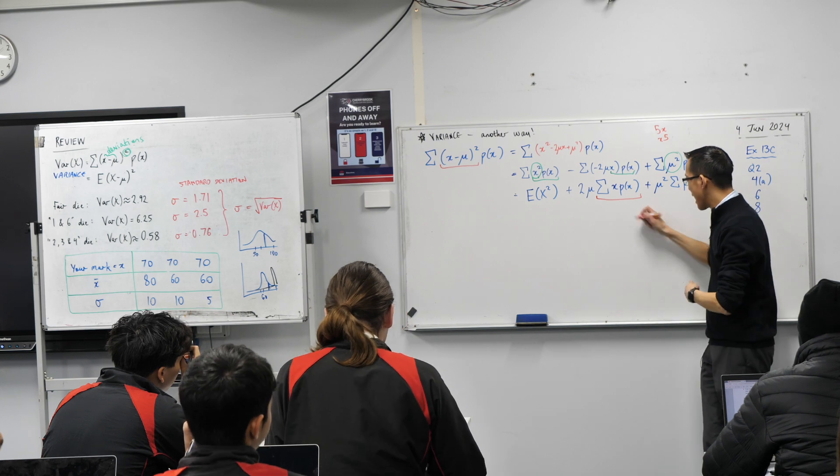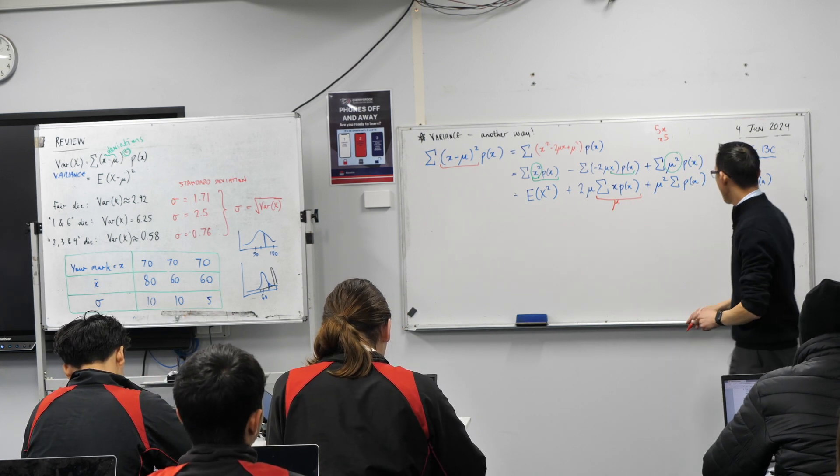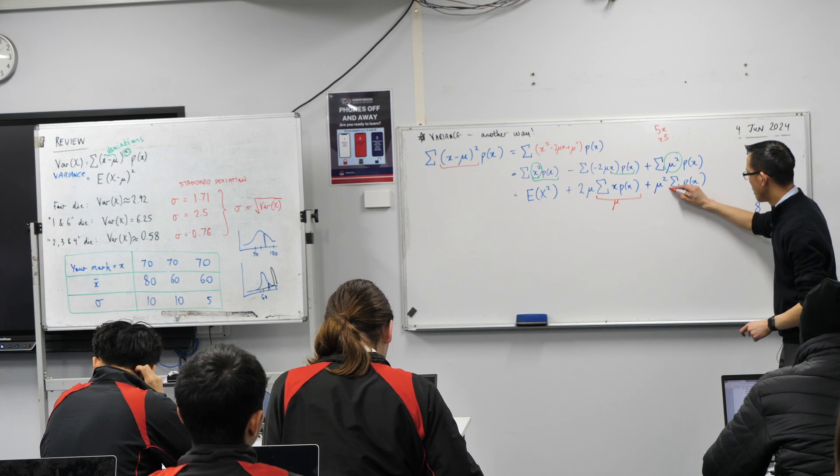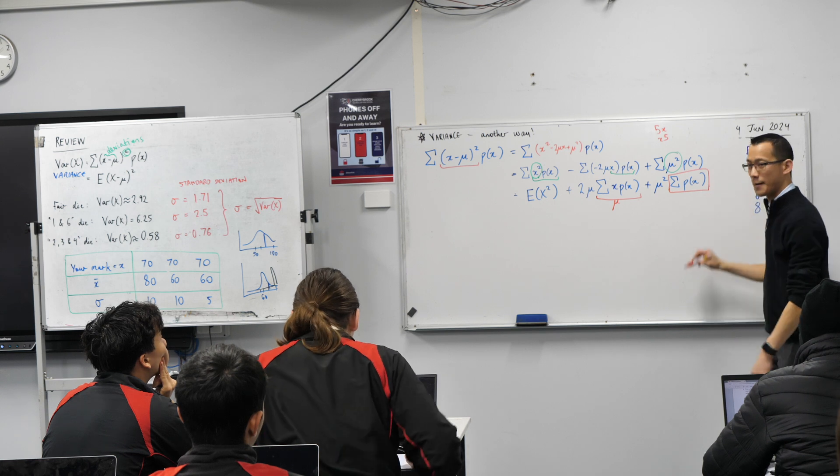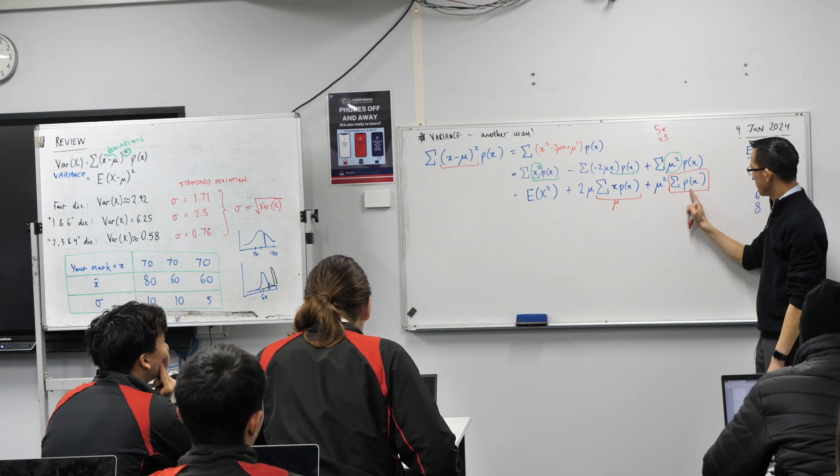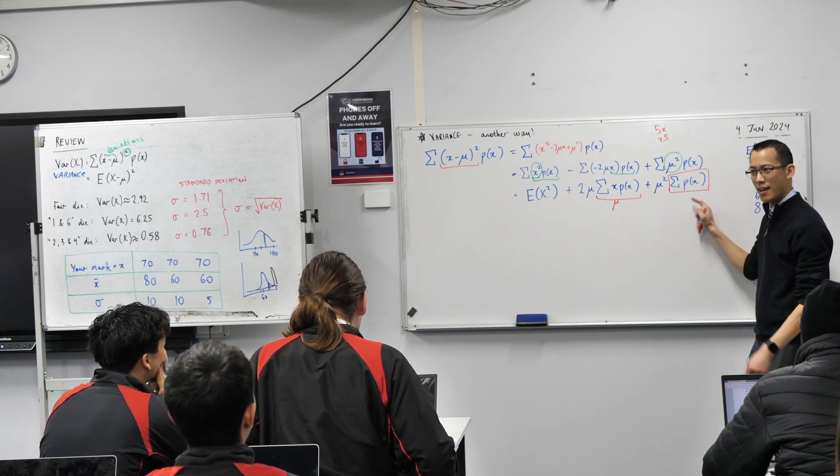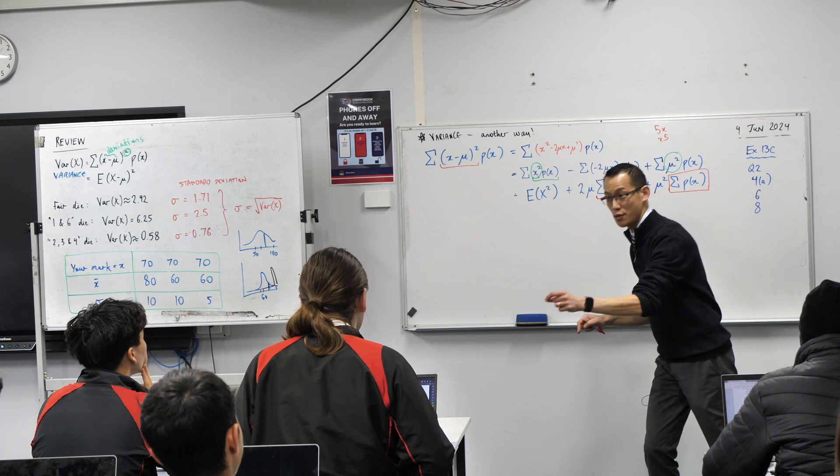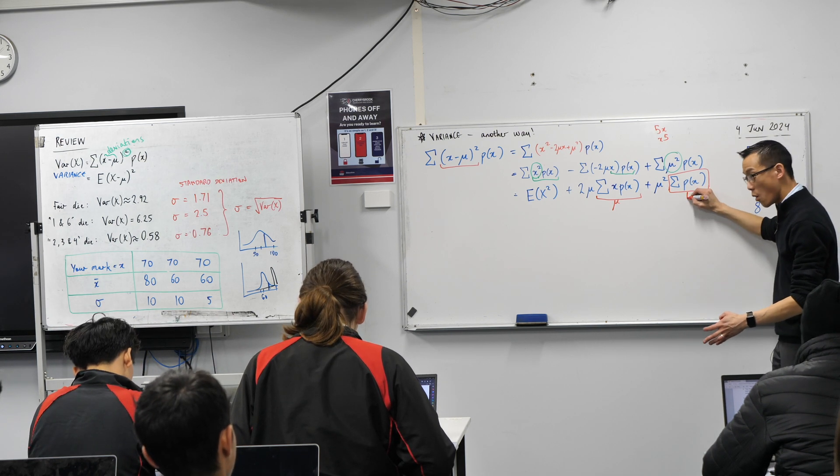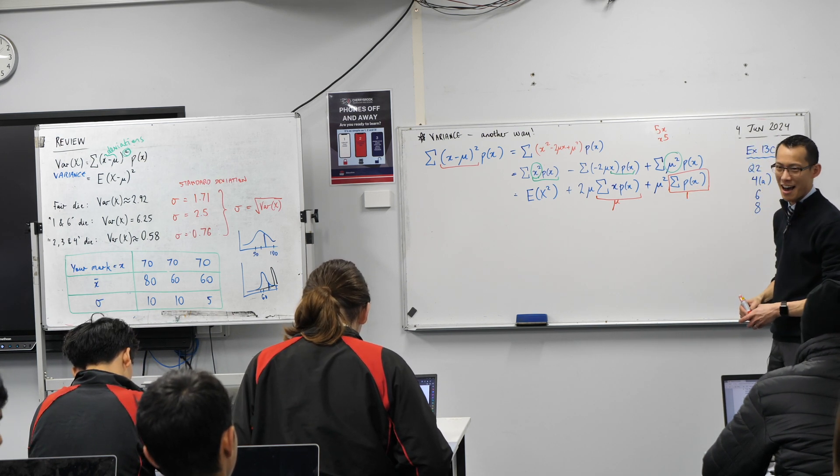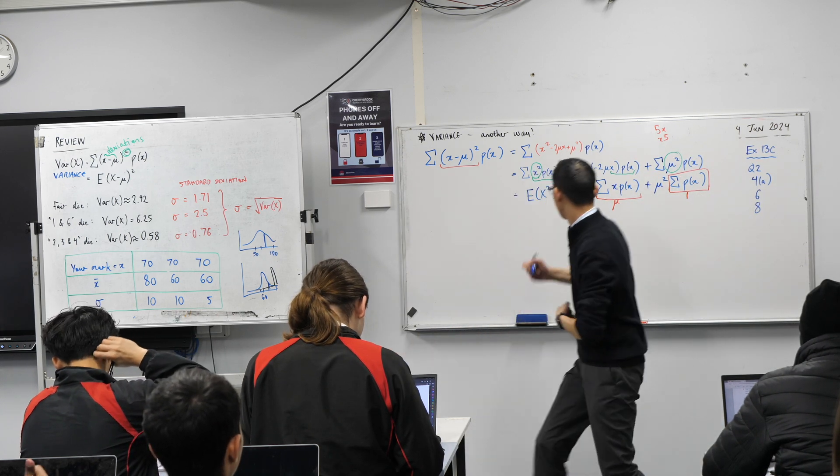And then down the end here, again, forget about everything else. Just look at this part in the box here. I'm adding up. Well, all I'm adding up is all of the probabilities and every probability distribution, when you add up all the probabilities, you just end up with one. You can see how taking the piles out has made this a lot simpler. So now we're pretty much there.